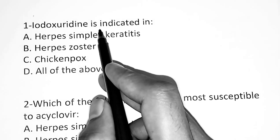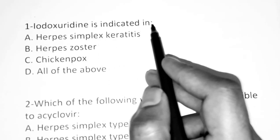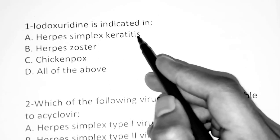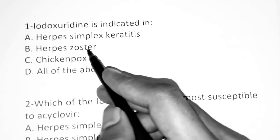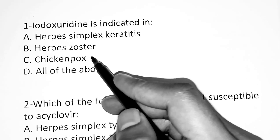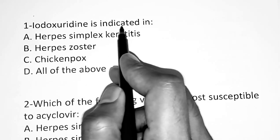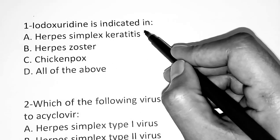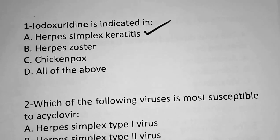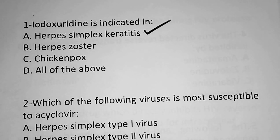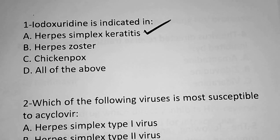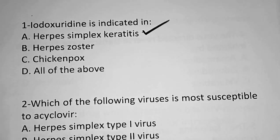Question 1: Edoxuridine is indicated in — Option A: herpes simplex, Option B: herpes zoster, Option C: chickenpox, Option D: all of the above. The correct answer is Option A — Edoxuridine's indication is herpes simplex. So the first question is over.